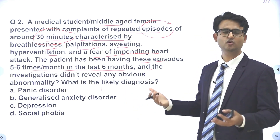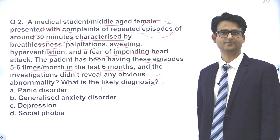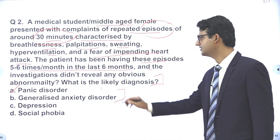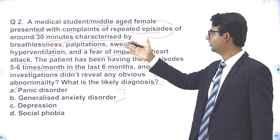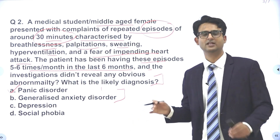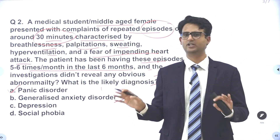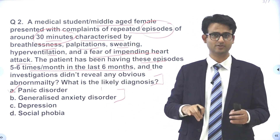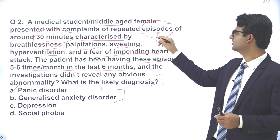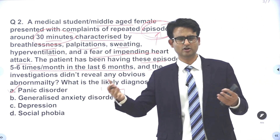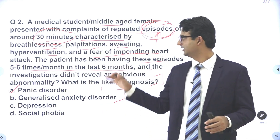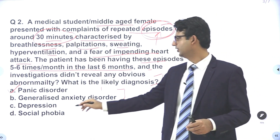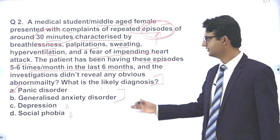ECG, ECG, ECG — all came out normal. If the panic attacks are happening again and again, our diagnosis becomes panic disorder. The answer is option A, panic disorder. Some students mistakenly marked GAD, thinking symptoms of anxiety continuing for more than six months meant GAD — please never mark the answer on the basis of duration only. GAD does not present with discrete episodes; in GAD the symptoms are free-floating anxiety and the patient is always anxious. Here we have clear-cut episodes — five to six per month — which points strongly to panic disorder rather than GAD. There is nothing to suggest depression or social phobia here. The answer is panic disorder.